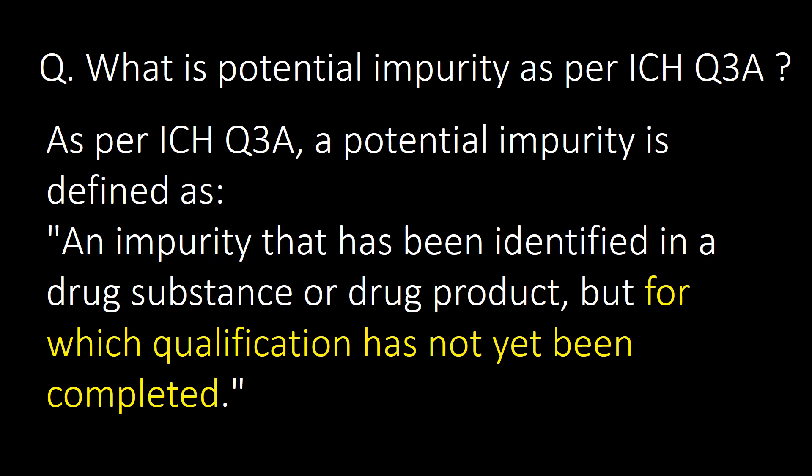What is a potential impurity as per ICH Q3A? As per ICH Q3A, a potential impurity is defined as an impurity that has been identified in a drug substance or drug product but for which qualification has not yet been completed.